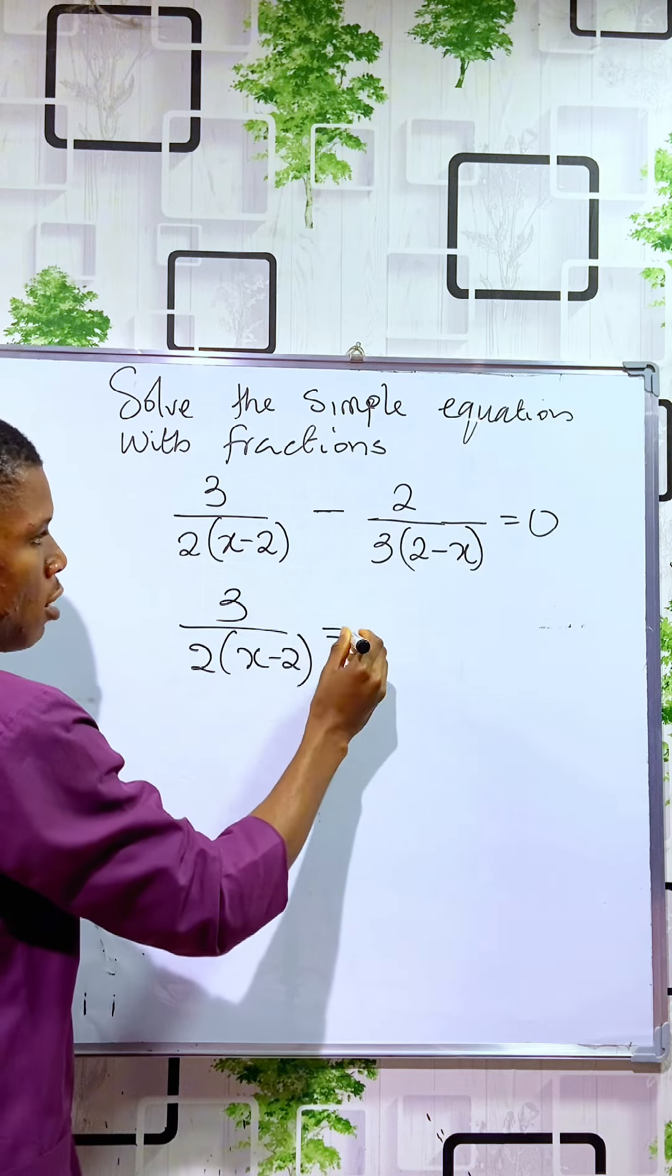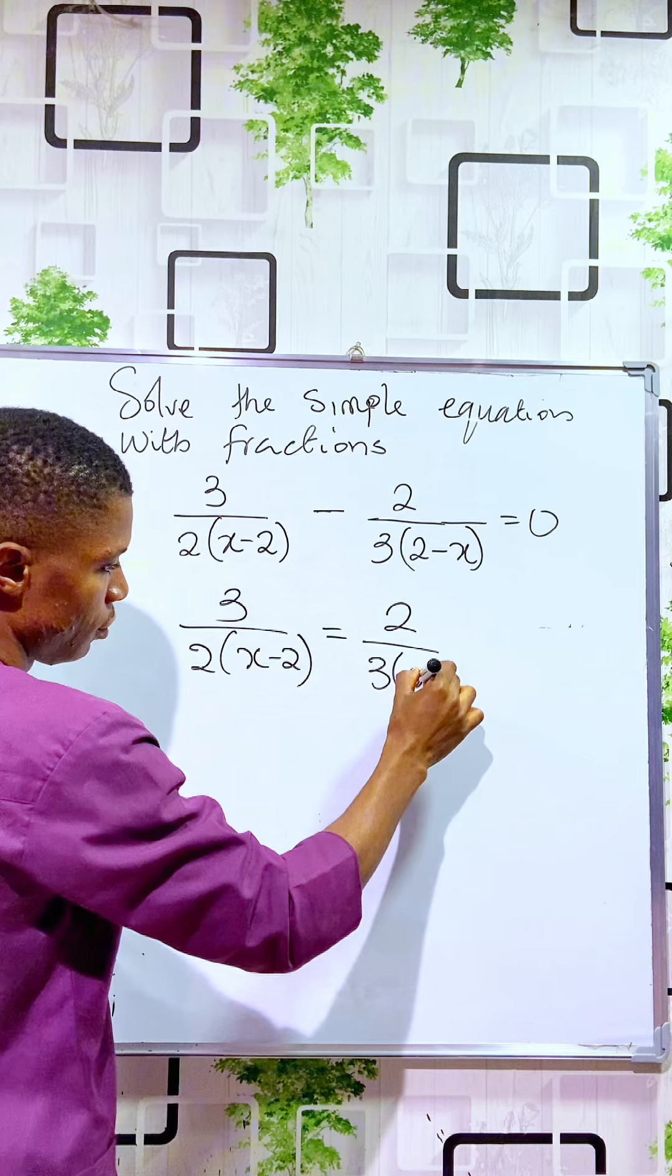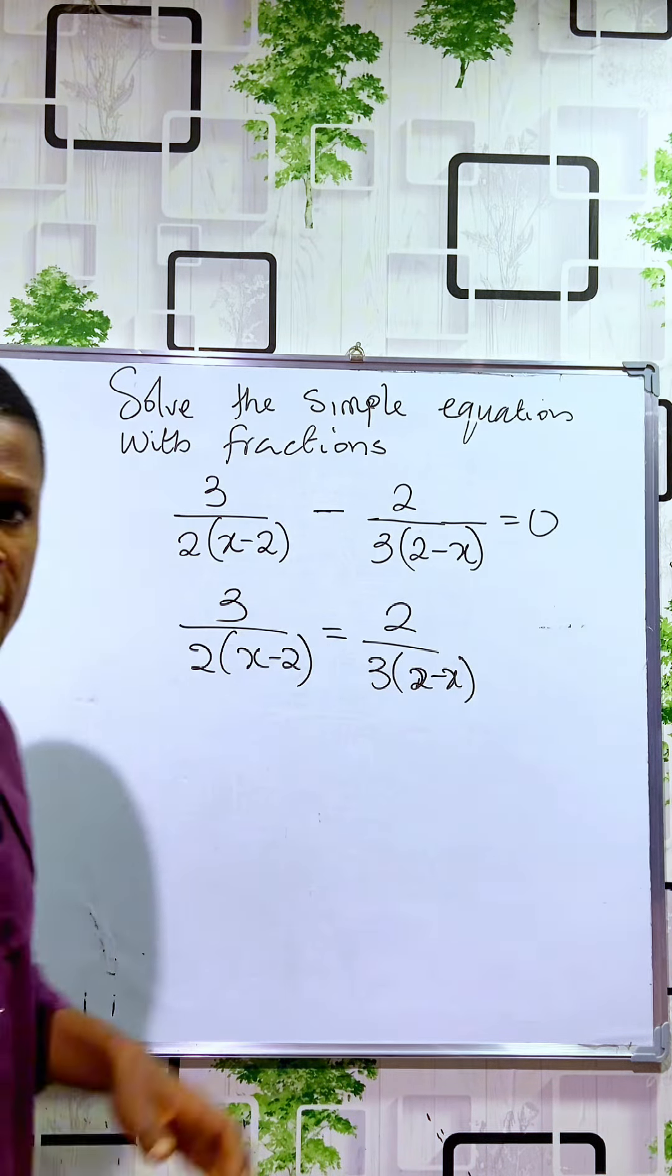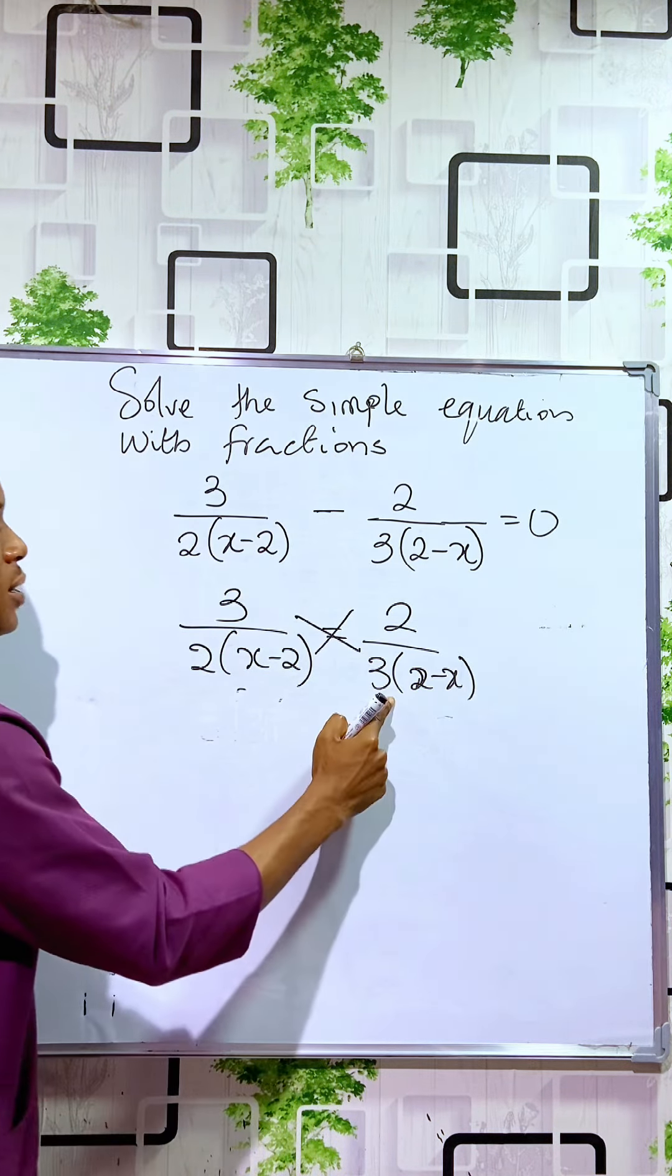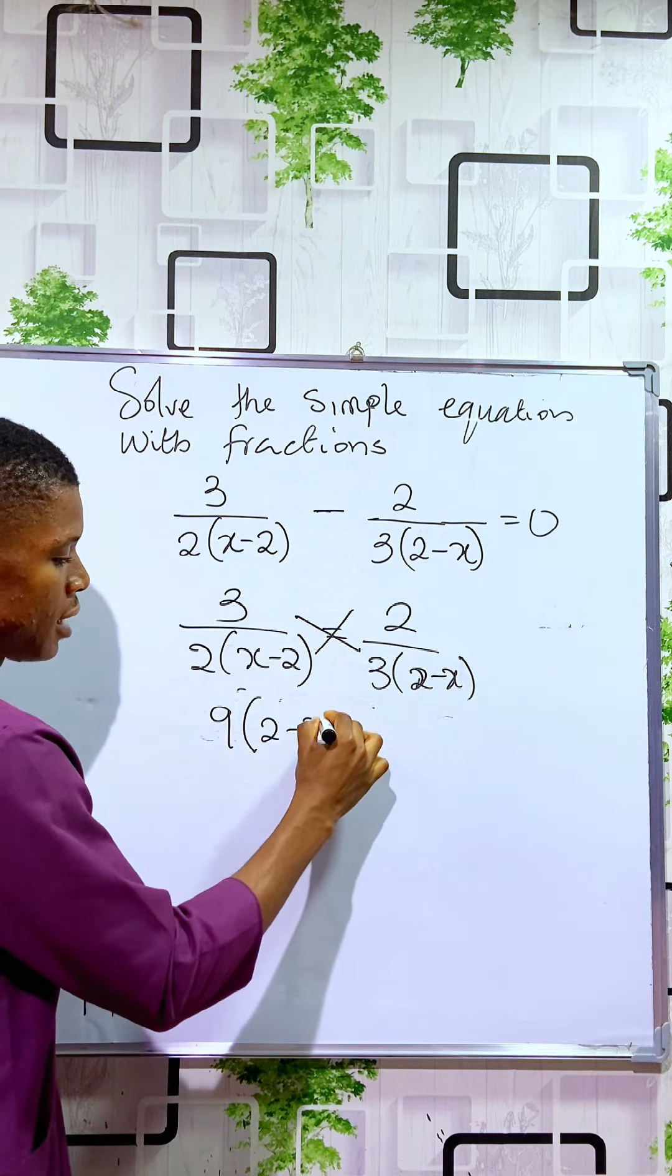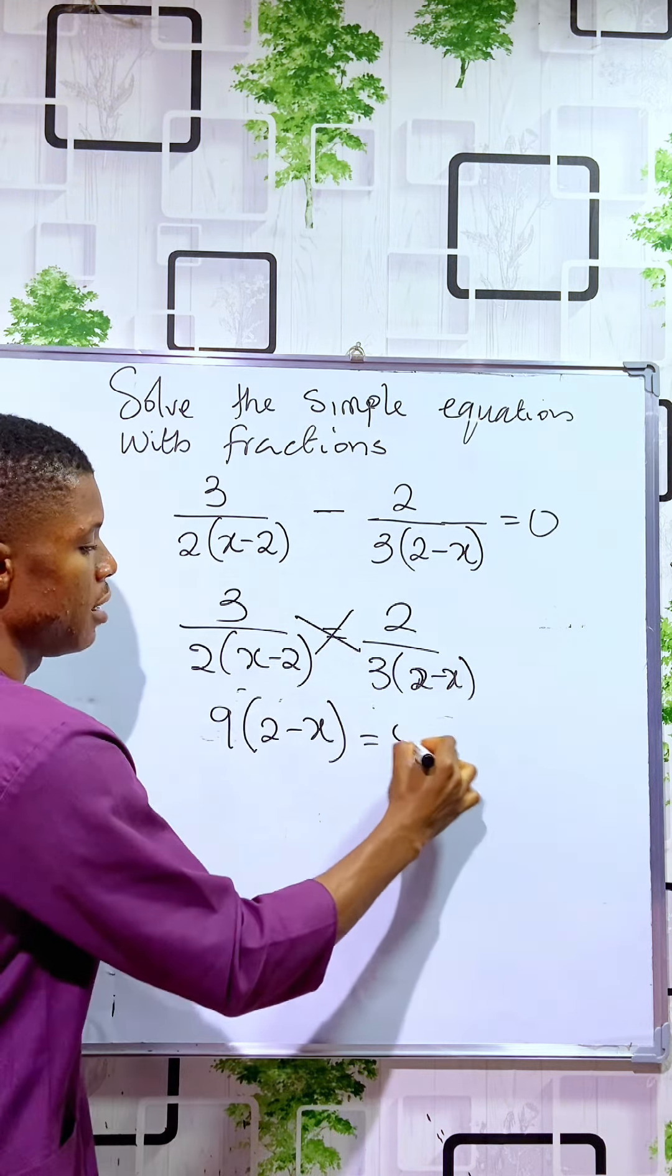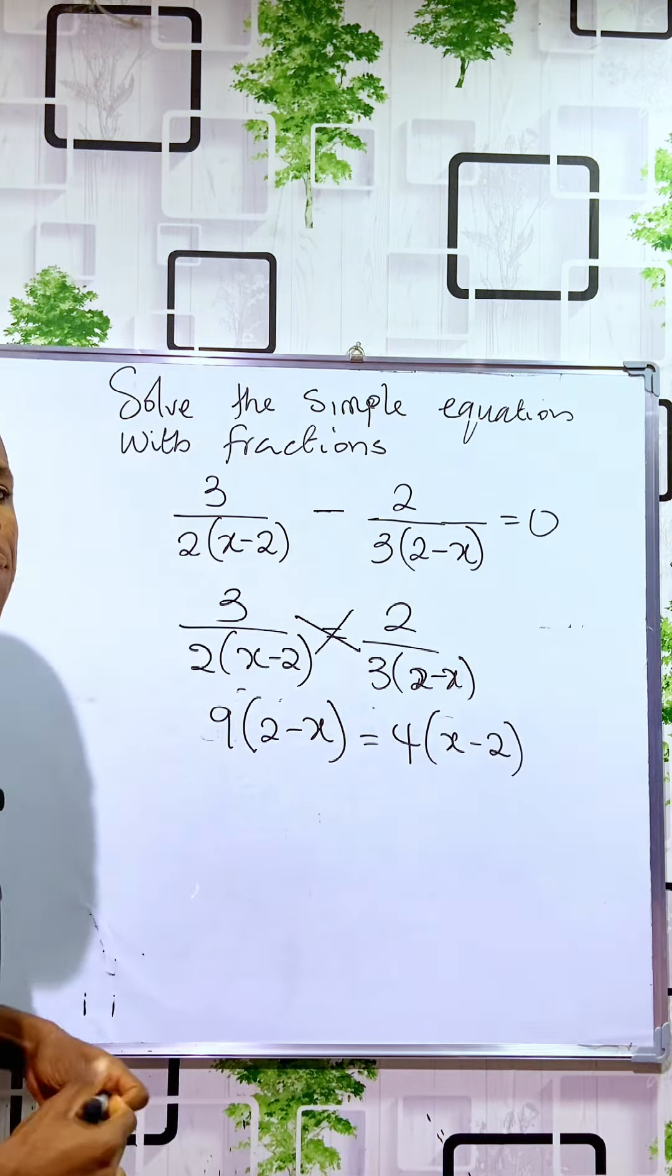Then the next thing you do is to cross and multiply. So you have 3 times 3 is 9, you have it as 9 into 2 minus x. 2 times 2 is 4, you have it as 4 into x minus 2.